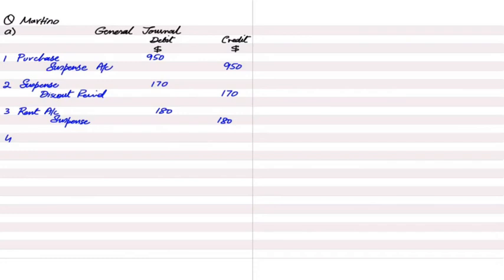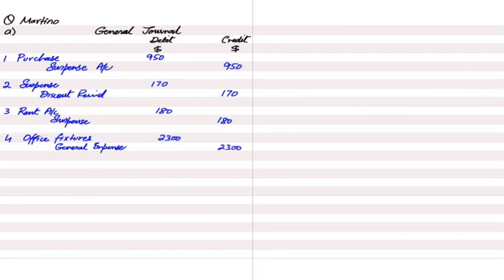In note number four, a purchase of office fixture for 2,300 has been recorded in the general expense account. Office fixture is basically a non-current asset, so instead of debiting the fixture account, we debited a general expense account. General expense is revenue expenditure and office fixture is capital expenditure. To correct this: debit the office fixture account and credit the general expenses account. These were the four errors that we just corrected.